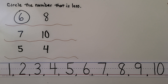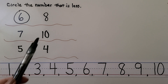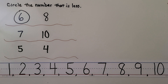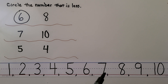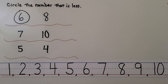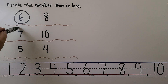What about the pair seven and ten? Which one do you think is less — seven or ten? Seven comes first in counting order before ten. If you said seven, you're right. Seven is less than ten.